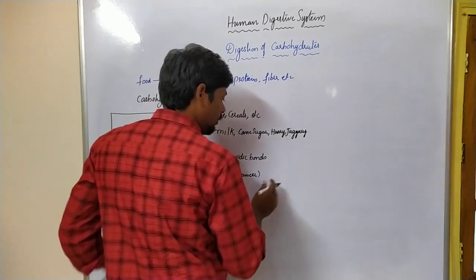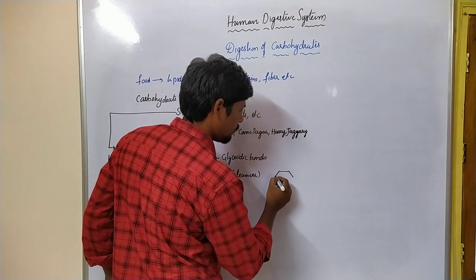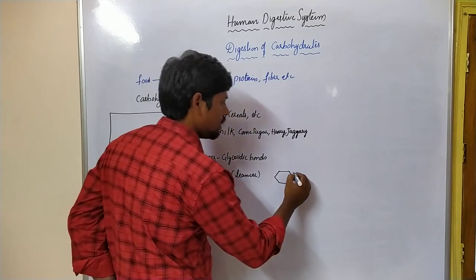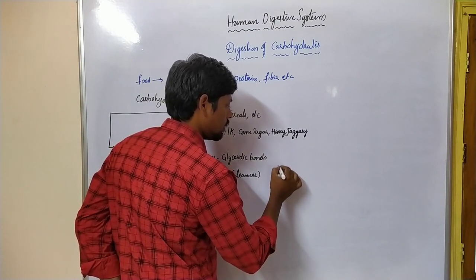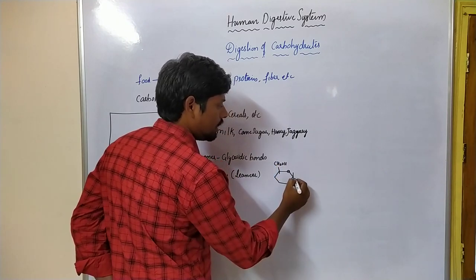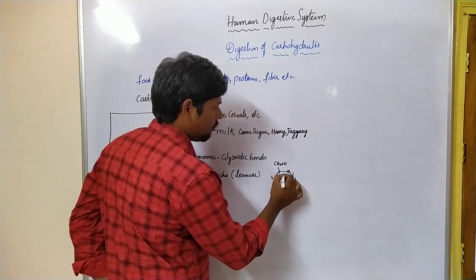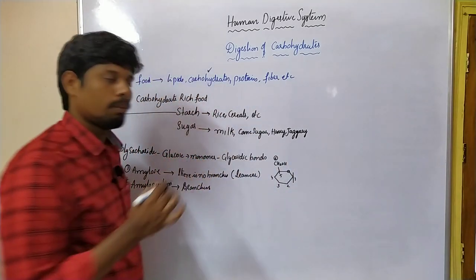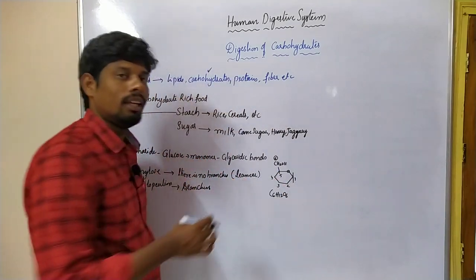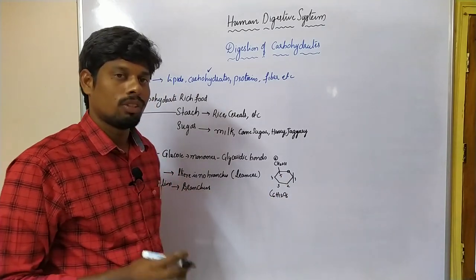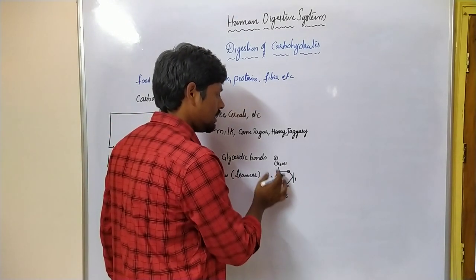There are no branches in the linear structure. If you see the structure of glucose — here is oxygen, carbon, CH₂OH — this is carbon 1, carbon 2, 3, 4, 5, and 6. Six carbons and the formula is C₆H₁₂O₆. I am not going to draw the hydrogen and OH groups on the glucose; I just want to show how the linear structure of amylose is presented. This is one glucose that contains 6 carbons.